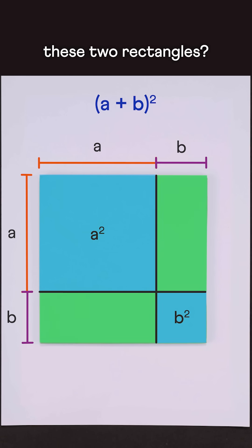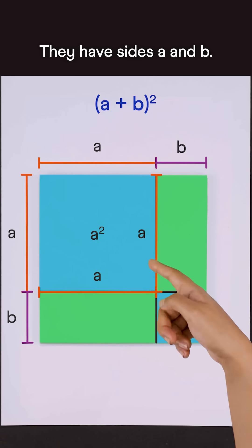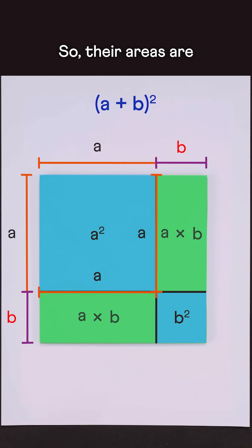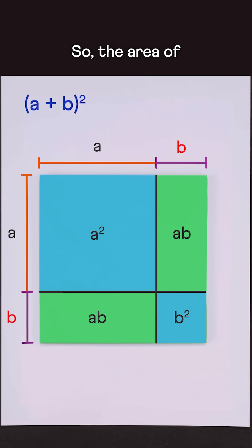What about these two rectangles? They have sides A and B, so their areas are A times B. So the area of this whole square is A squared plus 2AB plus B squared.